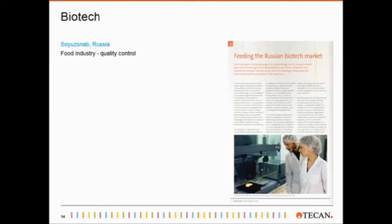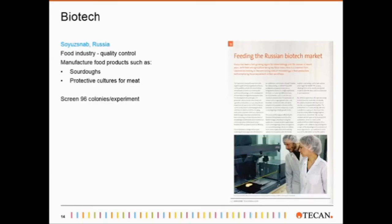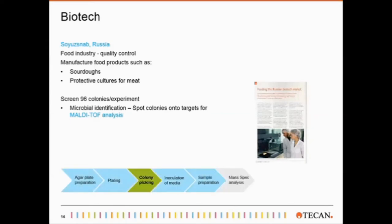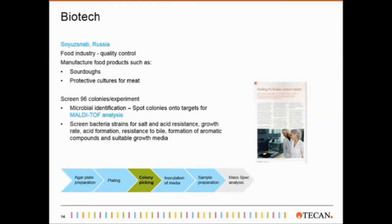Jutsnap in Russia is a company in the food industry that does quality control. They also manufacture food products like sourdough or protective cultures for meat. Beside colony picking, they also do microbial identification, where they spot colonies onto a target for MALDI-TOF analysis. Their automated workflow includes preparing agar plates, plating colonies, picking, inoculation of media, and sample prep for mass spec. They screen bacteria traits for salt and acid resistances, growth rate, acid formation, resistance to bile, formation of aromatic compounds, and suitable growth media.